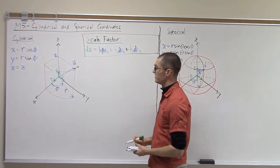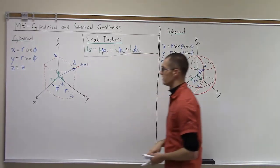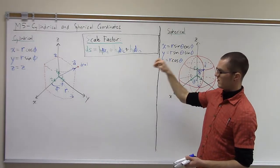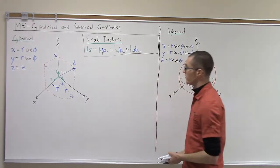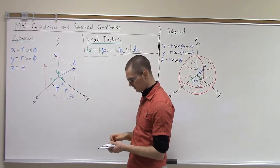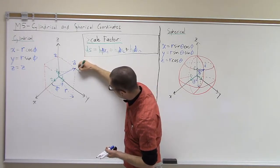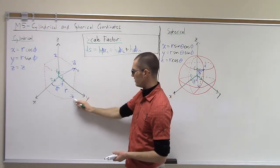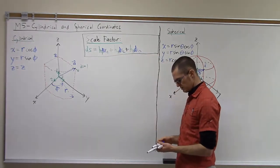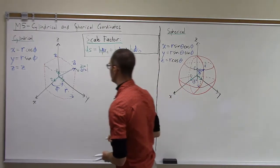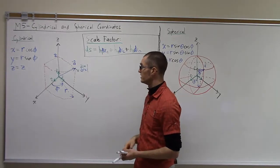The length of that move — when dr is equal to 1, moving only in the radial direction, parallel to the xy plane — ds is equal to 1. That's because r already has units of distance, so if we make a unit change in r, the path length is just equal to 1. So we can say that h sub r is equal to 1.